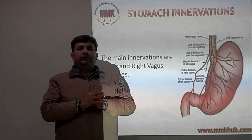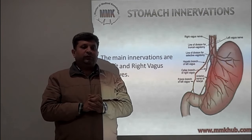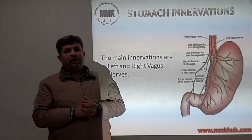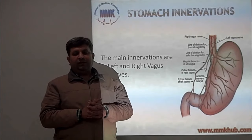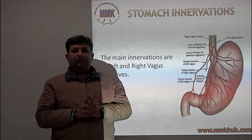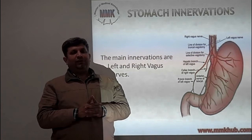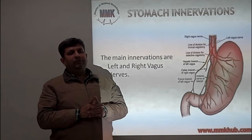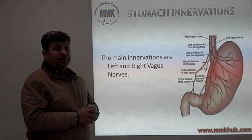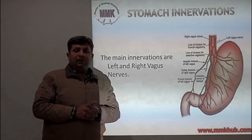Now the nerve innervation of the stomach. The stomach has two types of nerve supply: parasympathetic and sympathetic, which are portions of the autonomic nervous system supplying the gastrointestinal tract. The parasympathetic nerve supply is mainly by the vagus nerve — right and left vagus nerves. The left vagus nerve is anterior to the esophagus and the right vagus nerve is posterior. The left vagus nerve has a pyloric branch and the anterior nerve of Latarjet, which supplies the pyloric canal region.